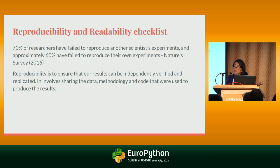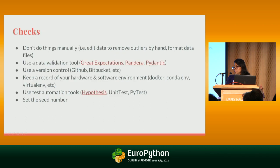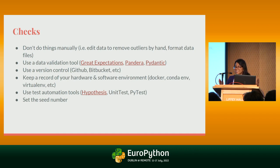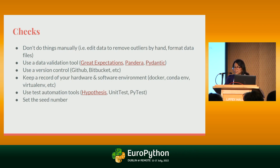I've found there are some tools that can save time on documentation. The first and foremost rule: don't do things manually. For example, if you're working with an Excel file and you can clearly see a data entry mistake or outliers, the easiest thing would be to manually edit the file — don't. Don't do it, because that is not reproducible. You want to make sure everything is automated.